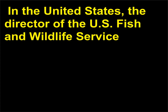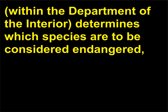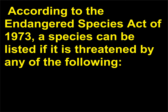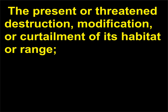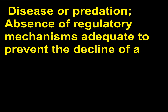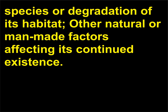In the United States, the director of the U.S. Fish and Wildlife Service, within the Department of the Interior, determines which species are to be considered endangered, based on research and field data from specialists, biologists, botanists, and naturalists. According to the Endangered Species Act of 1973, a species can be listed if it is threatened by the present or threatened destruction, modification, or curtailment of its habitat or range; utilization for commercial, sporting, scientific, or educational purposes at levels that detrimentally affect it; disease or predation; absence of regulatory mechanisms adequate to prevent the decline of a species or degradation of its habitat; or other natural or man-made factors affecting its continued existence.